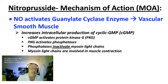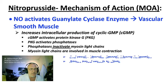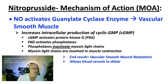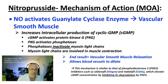This increases the production of cyclic GMP, which activates protein kinase G, which goes on to phosphorylate and activate phosphatases. These phosphatases inactivate myosin light chains, which are involved in muscle contraction. The end result is vascular smooth muscle relaxation, allowing blood vessels to dilate. This mechanism is similar to that of PDE5 inhibitors such as Viagra and Cialis, which elevate cyclic GMP by inhibiting degradation.